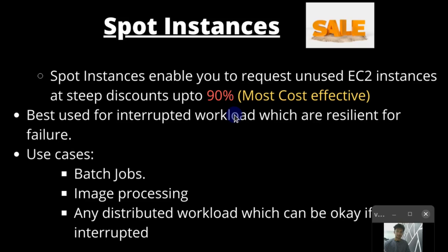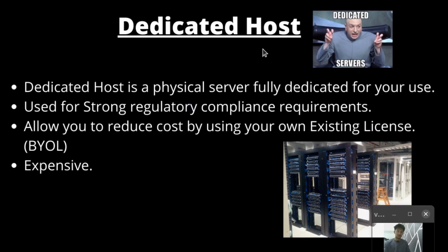The next launch type is spot instances. Spot instances enable you to request unused EC2 instances at steep discounts — up to 90% off — making them the most cost-effective option. The idea is you can launch unused instances at a very low price, but if someone pays more than you, you can lose that instance. It is best used for interrupted workloads that are resilient to failure, such as batch jobs, image processing, or any distributed workload that can tolerate interruption.